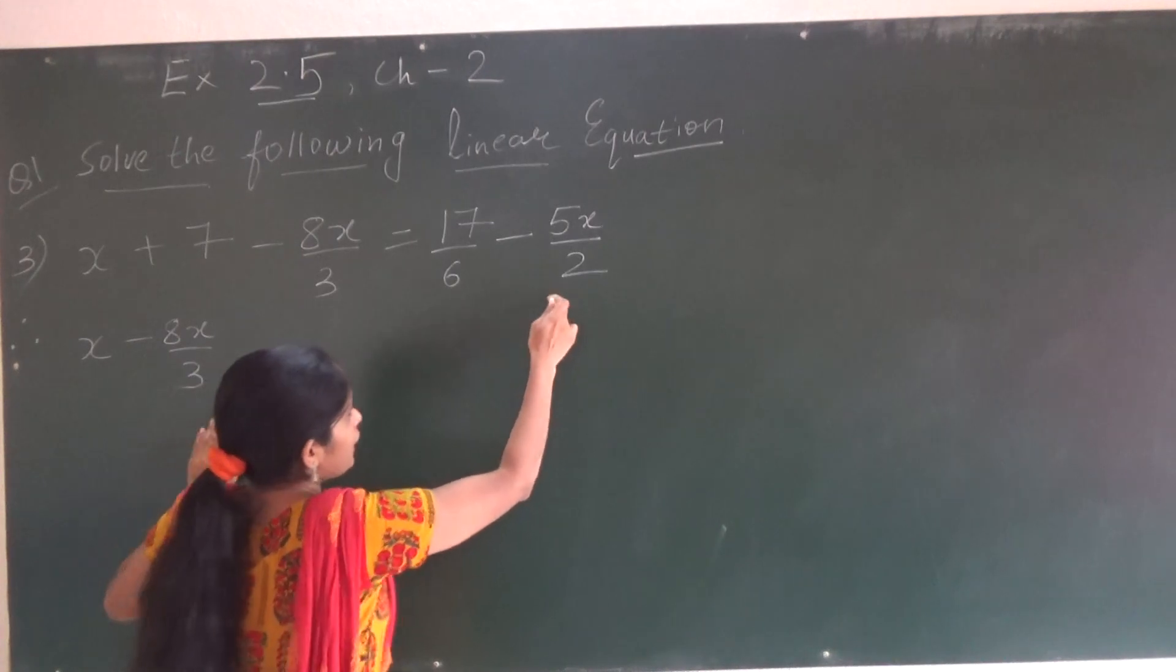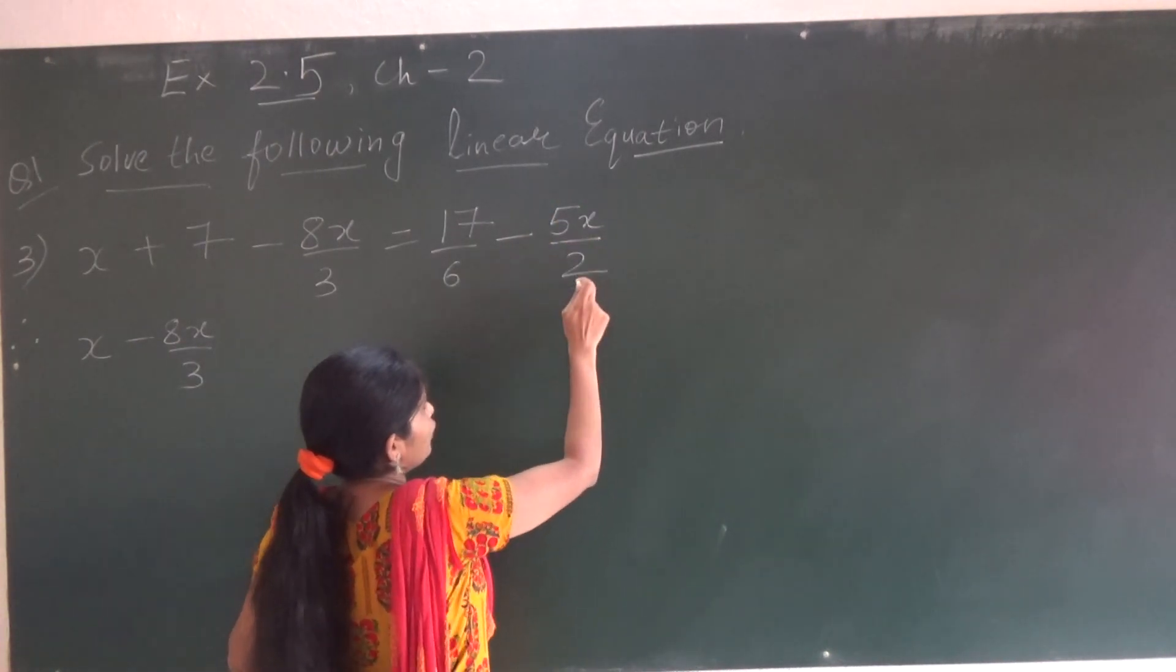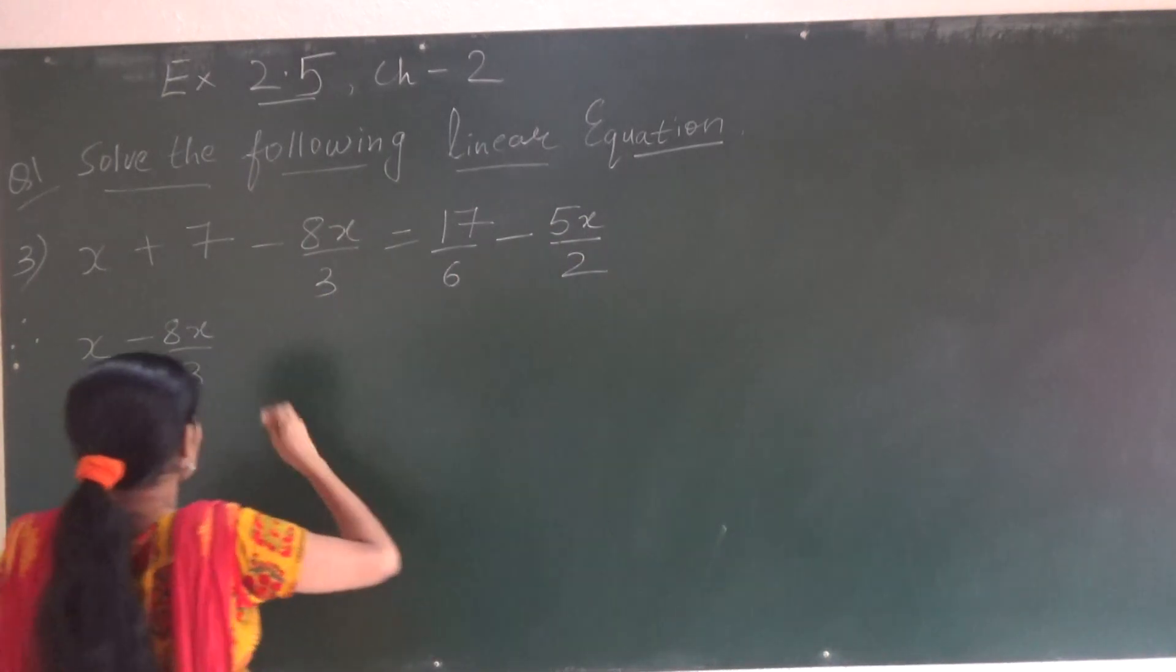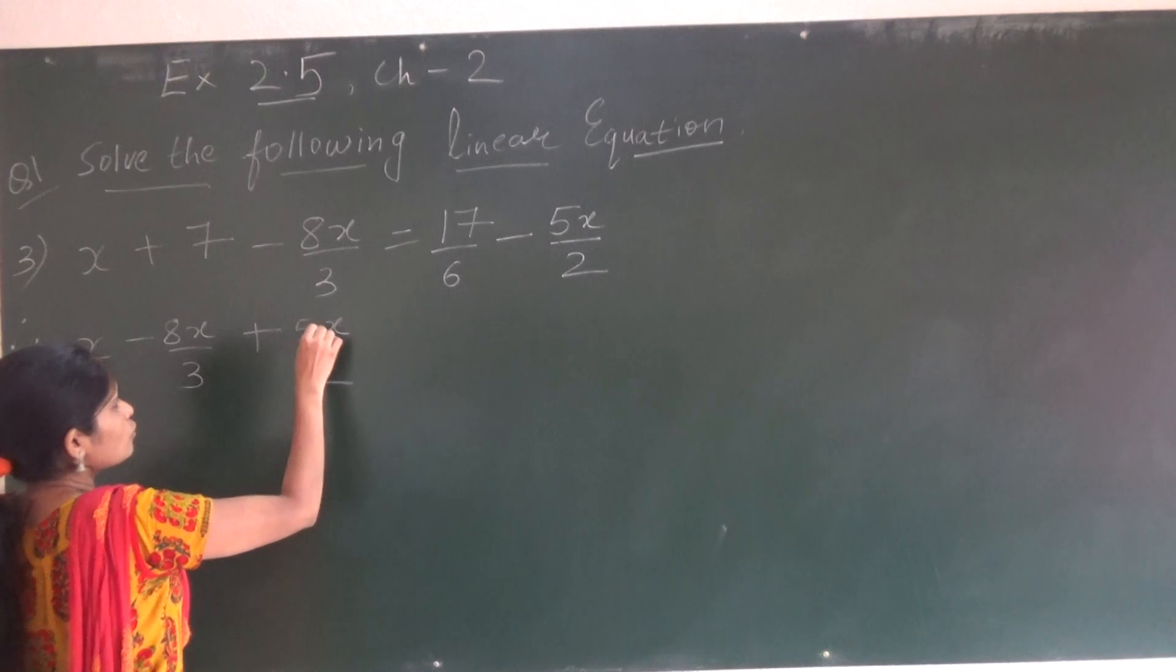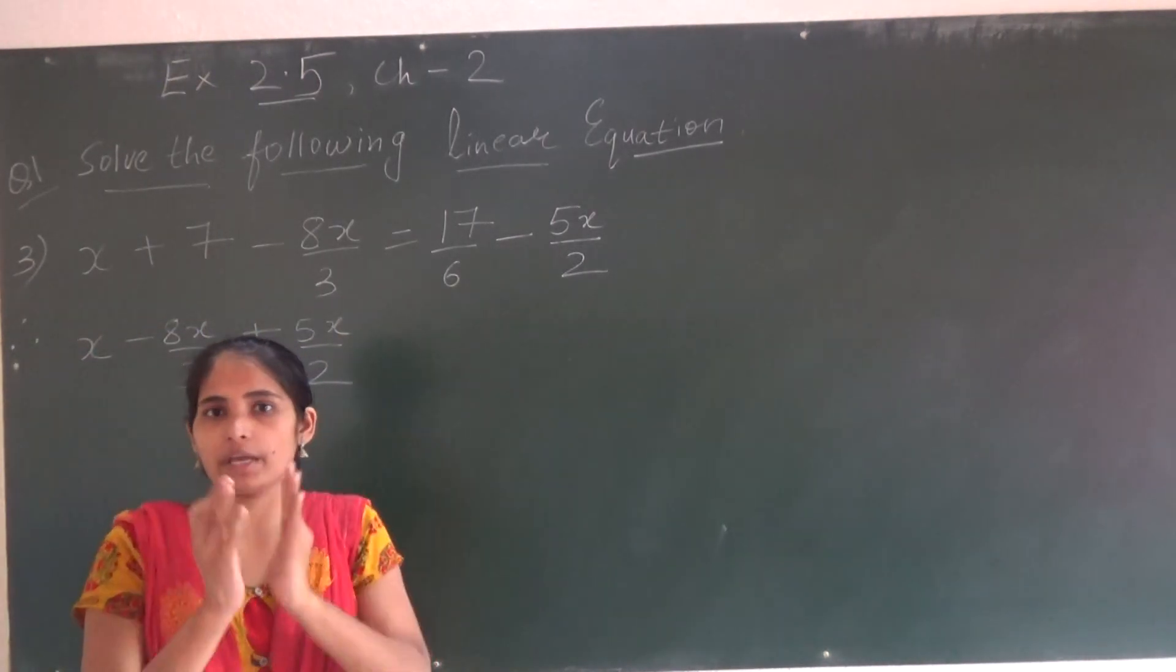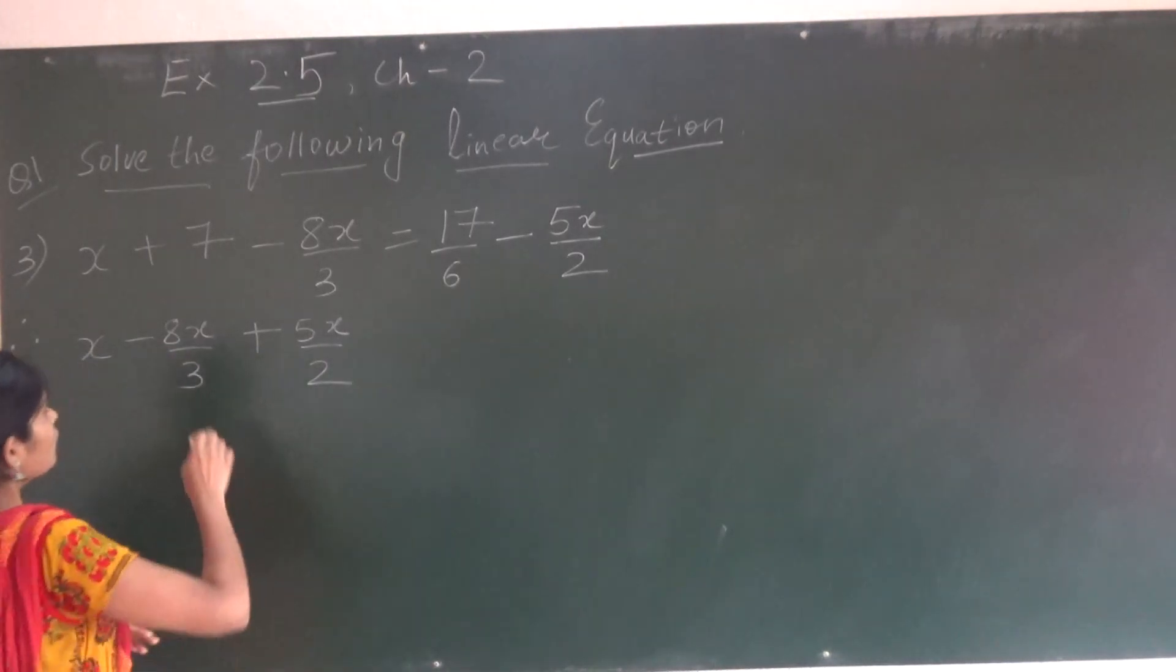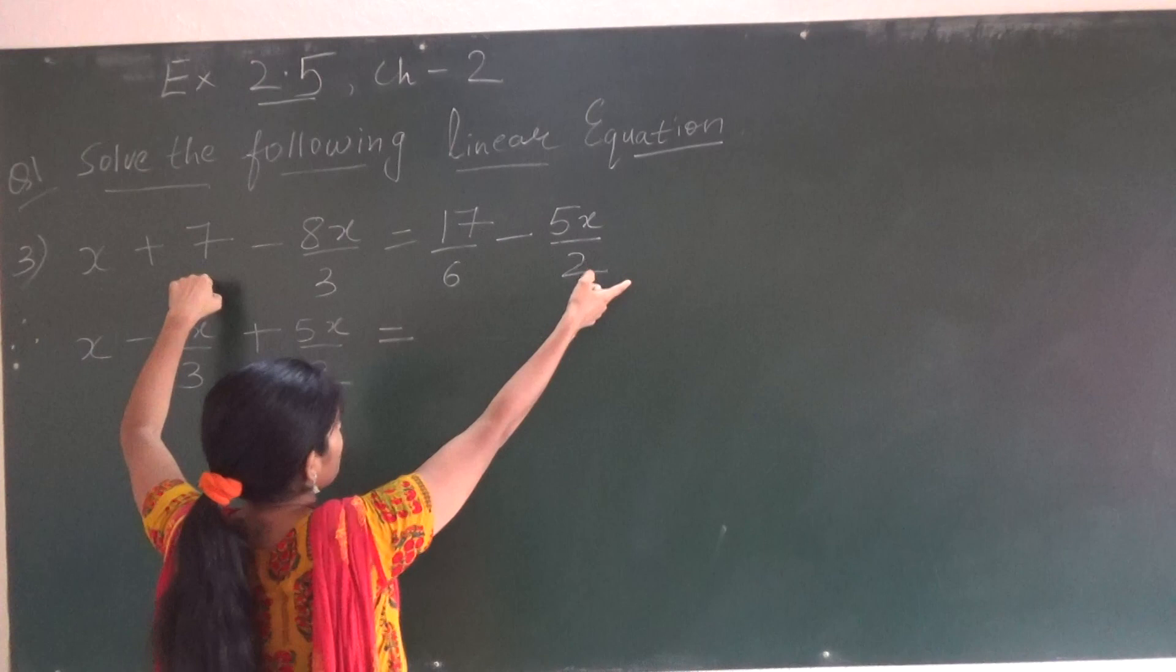Now coming to this side. Here also there is one term having x. Minus 5x upon 2. So this we will shift over here, so it will be plus 5x upon 2. So this 1, 2 and 3 like terms we have kept together. Now this plus 7 we will take that side.